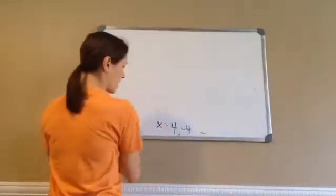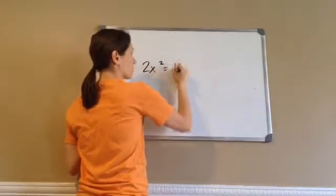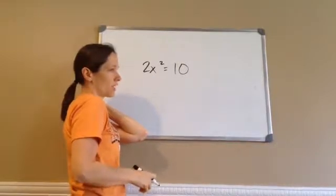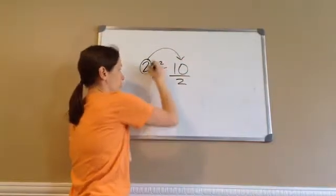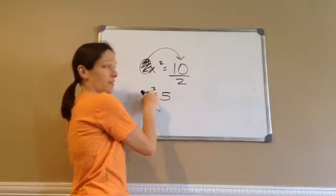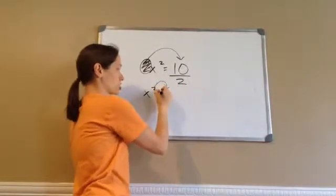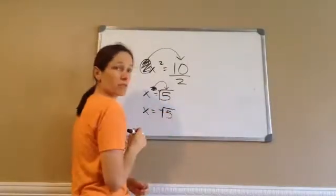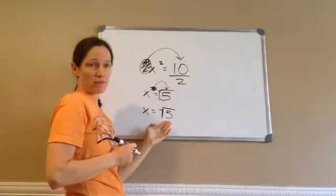Now this next one is not harder, but it kind of doesn't make as much sense to your brain, so just stay with me. Write this one down. 2x squared equals 10. This one doesn't have as many things that we have to do. But what's our first step? It says 2 times x squared. So, this times 2 becomes divided by 2. So, x squared equals 10 divided by 2 is 5. Now, we want to get rid of the square. So, we're going to move it across the equal, and it becomes the opposite, which is square root of. So, x equals the square root of 5. We don't know the square root of 5, so the answer is just square root of 5, because it's an irrational number — it keeps going on and on forever.